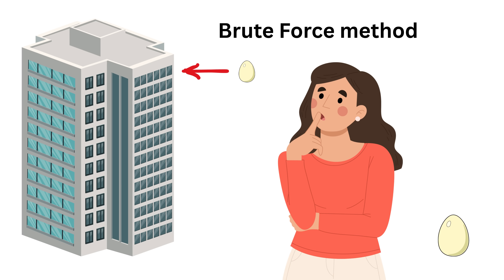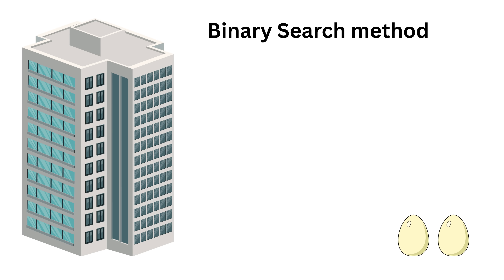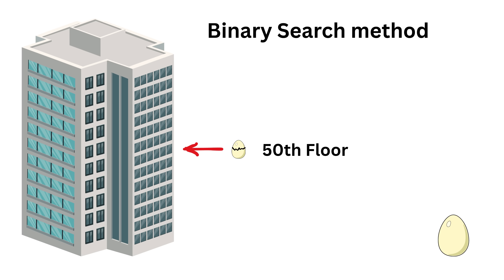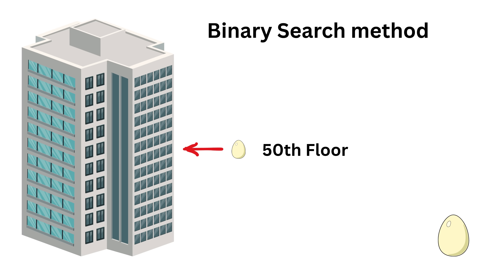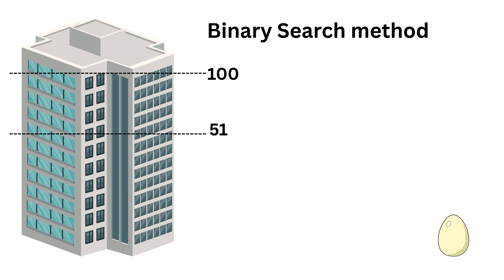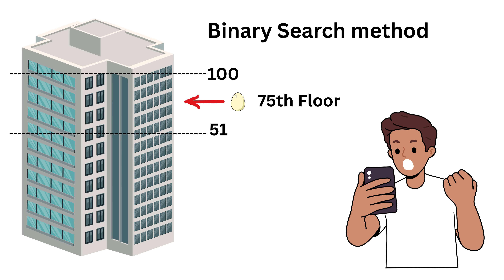Now let's step up from brute force and try to be a little smarter by using the idea behind binary search. Instead of going one floor at a time, suppose we try to cut the problem in half. So we first drop the egg from the 50th floor. If it breaks, we know the breaking point is somewhere between floor 1 and floor 49. If it doesn't break, then we know it lies somewhere between floor 51 and floor 100. We drop again in the middle of the remaining range, like floor 75, and keep repeating. This way we keep halving the search space, just like binary search. Sounds better, right? And yes, it is better than brute force.